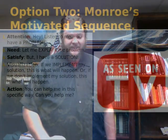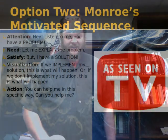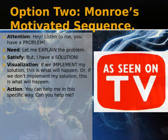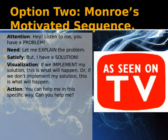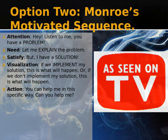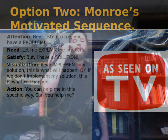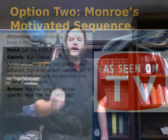Attention, need, satisfaction, visualization, and action. This can be implemented very well. The time when you want to use Monroe's Motivated Sequence is when you need your audience to make a quick emotional decision. That's when you use Monroe's Motivated Sequence.